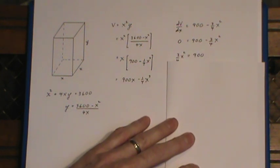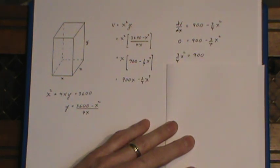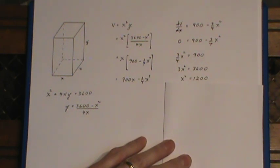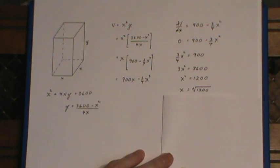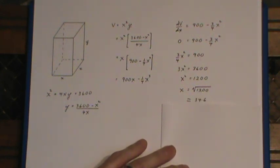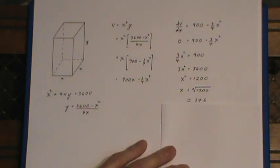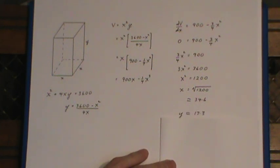Move the three-quarter x squared to the other side, multiply by 4, divide by 3, and then take the square root and that gives us the value of x. Approximately 34.6. If you want the value of y you just come over here and substitute that value in. That'll give you the y value.